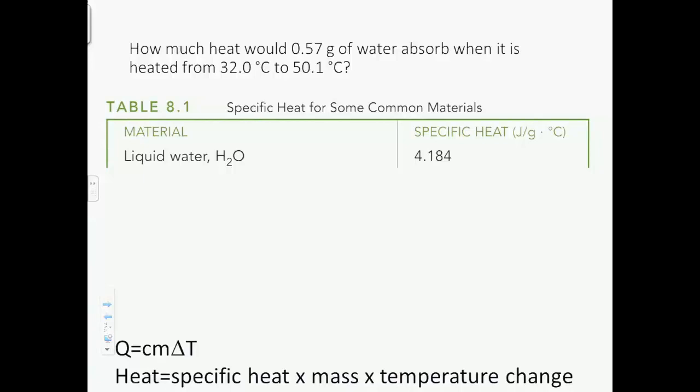Let's do some examples. The question is, how much heat would 0.57 grams of water absorb when it is heated from 32 degrees Celsius to 50.1 degrees Celsius? The first thing you want to do is lay down and figure out all of the different variables. Let's just underline our numbers: 0.57 grams from 32 degrees Celsius to 50.1 degrees Celsius. Grams, what is that a unit of? Mass. 32 degrees Celsius, that is a temperature. And 50.1 degrees, that is also a temperature.